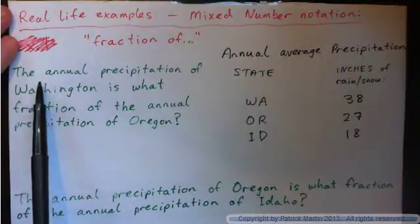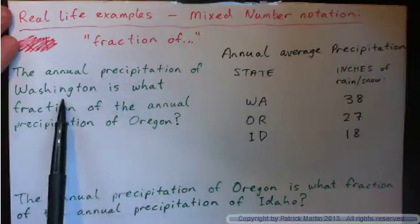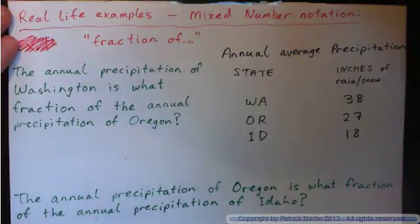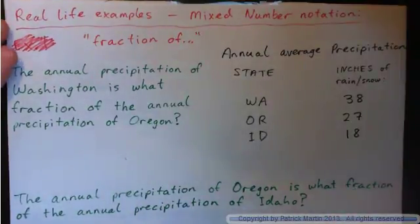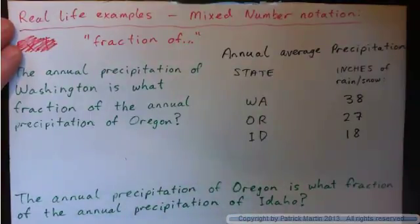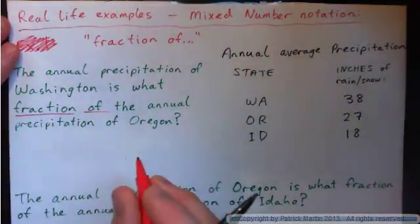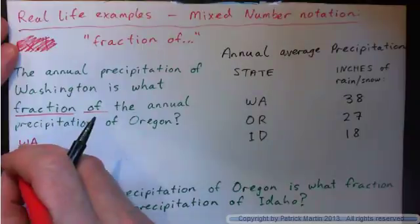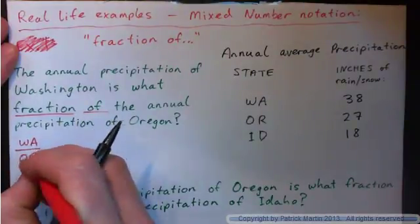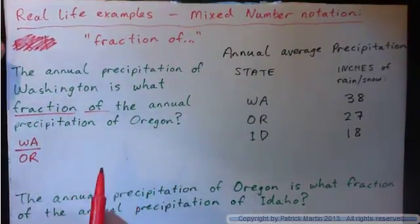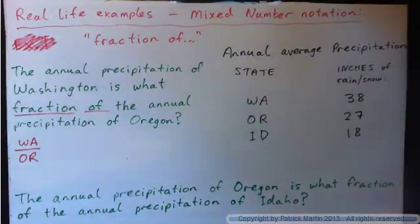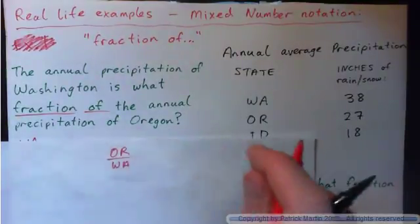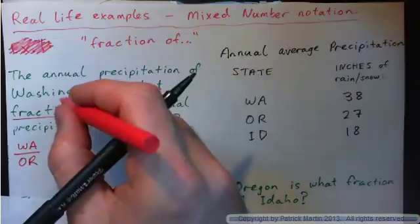If you're asked: the annual precipitation in Washington is what fraction of the annual precipitation of Oregon, this sentence has 'fraction of' in it. If Washington is to be a fraction of Oregon, it would look like Washington over Oregon, because it's asking for Washington as a fraction of Oregon. If it was the other way around — Oregon as a fraction of Washington — it would be Oregon over Washington. When you've got 'fraction of,' the word that comes first is over the next one.